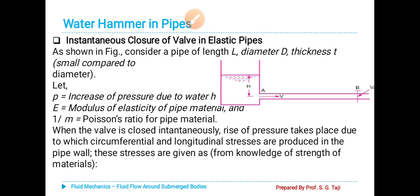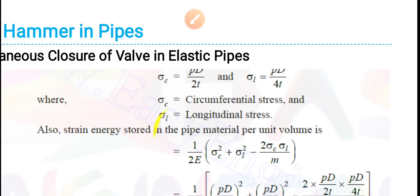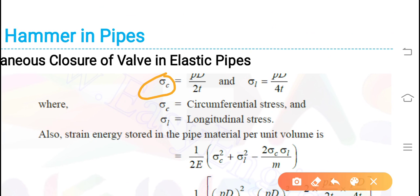These stresses are given from the knowledge of strength of materials: sigma_c is equal to pD divided by 2t, and sigma_l is equal to pD divided by 4t, where sigma_c is the circumferential stress and sigma_l is the longitudinal stress. Here, p is pressure, D is diameter, and t is thickness.